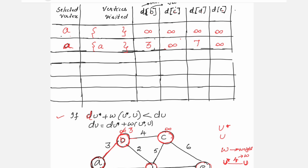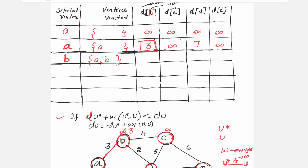Out of {3, infinity, 7, infinity}, the minimum is 3, and the corresponding node is B. Include B in the selected vertex and in the visited vertices — now A and B are in the visited list. B's distance is finalized. Now check B to C, B to D, and B to E.